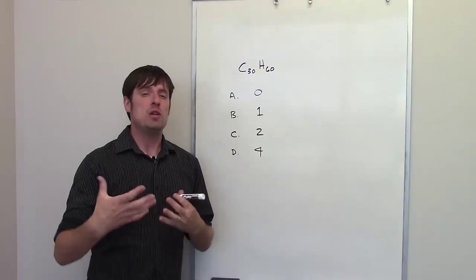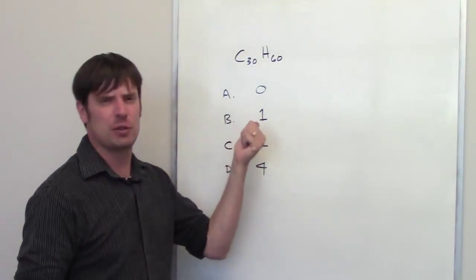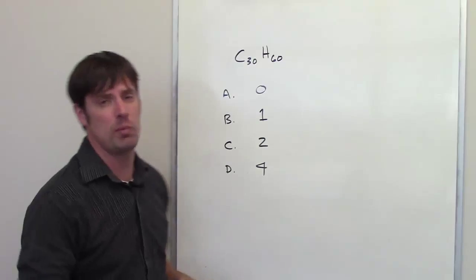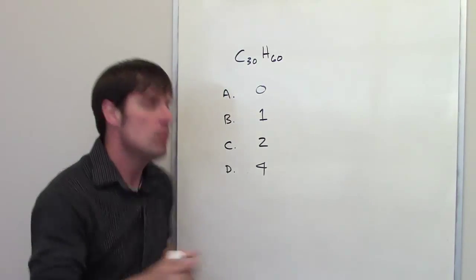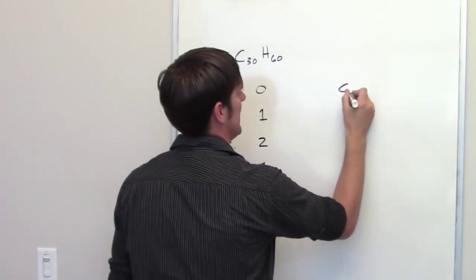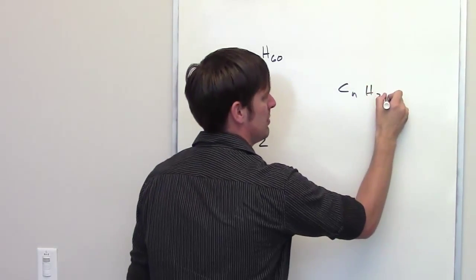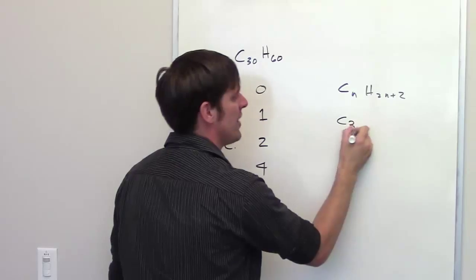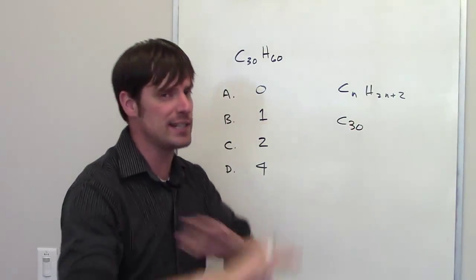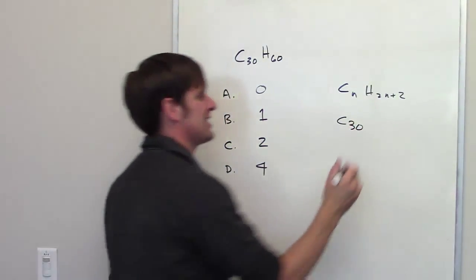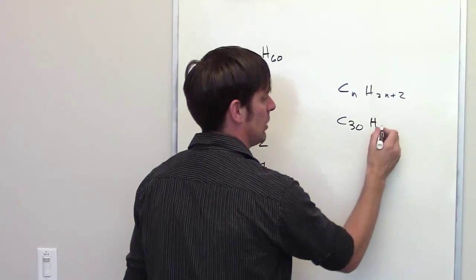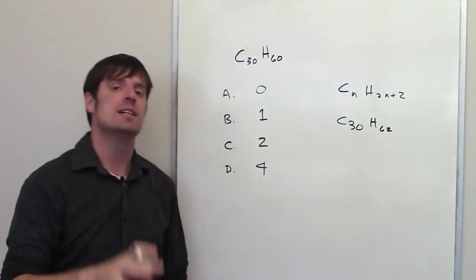This leads beautifully into our next question. How many degrees of unsaturation do we have in a molecule with this formula, C30H60? Well, you might remember from my previous explanation that the general formula for an alkane is CnH2n plus 2, which means that if I had 30 carbons and I had no rings, no double bonds, nothing else exciting, the formula for this molecule would be C30H62.